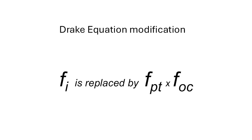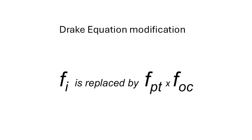We resolve the Fermi paradox by replacing the original term for F sub i, the fraction of planets with life that have developed intelligent life, and F sub c, the fraction of planets with intelligent life that develop advanced communicative civilizations, with F sub pt and F sub oc.